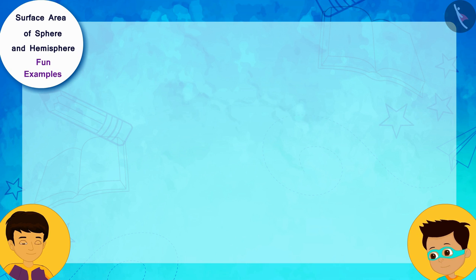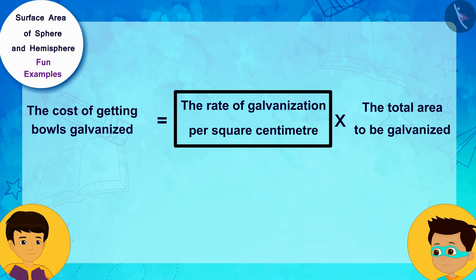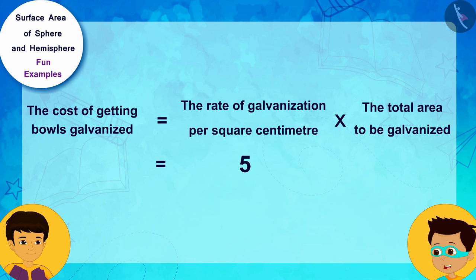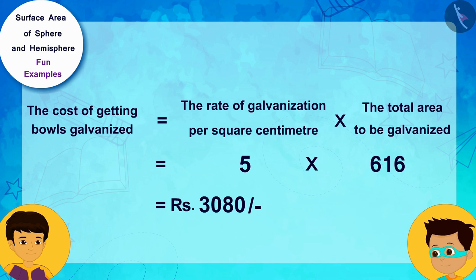Now, we just need to multiply the galvanization rate per square centimeter, 5 rupees, by total surface area to be galvanized, 616. Look, Manas! It will take a total of 3,080 rupees to get the galvanization done.